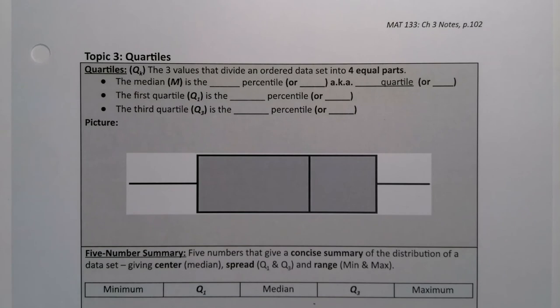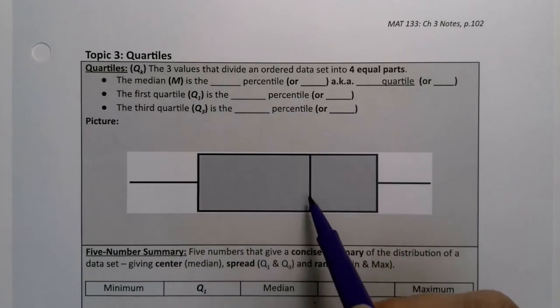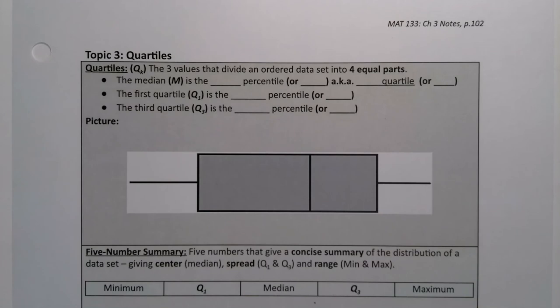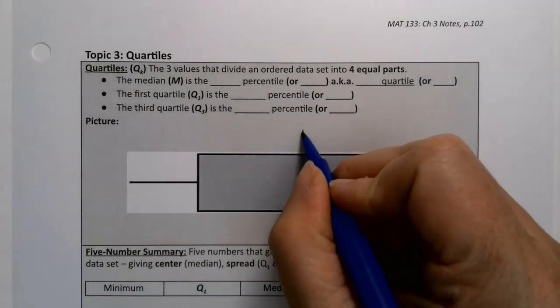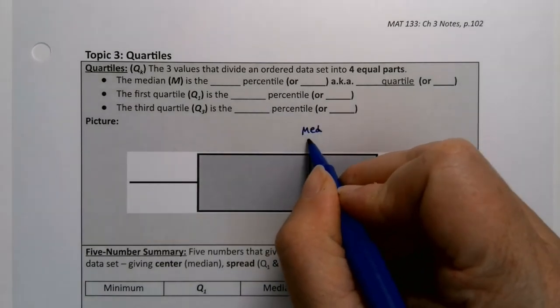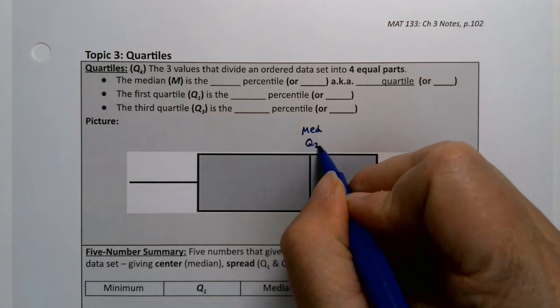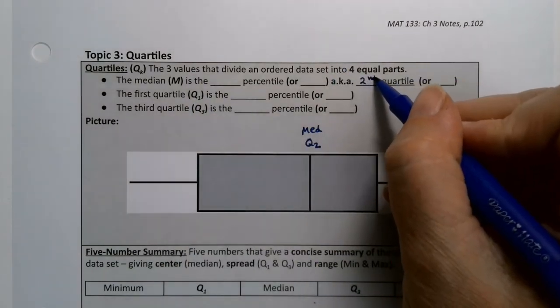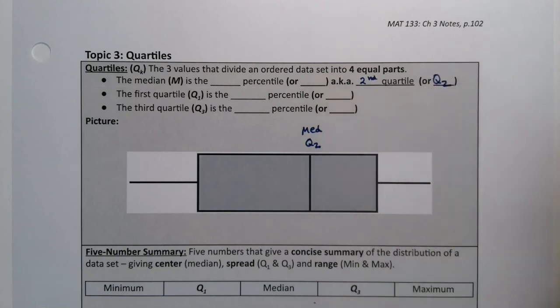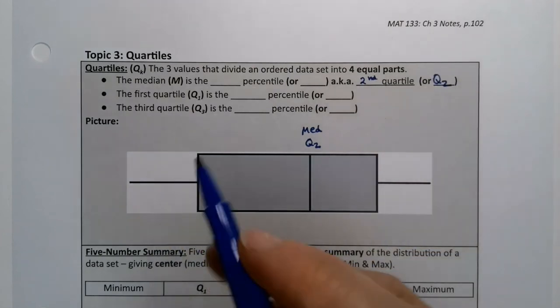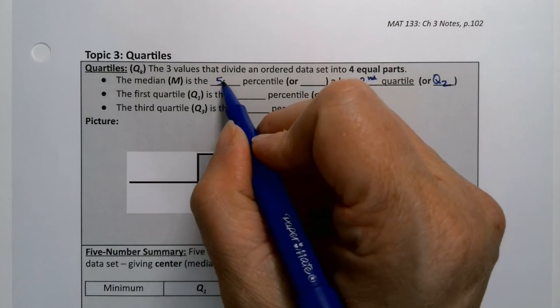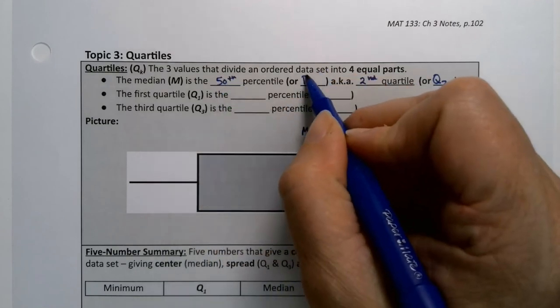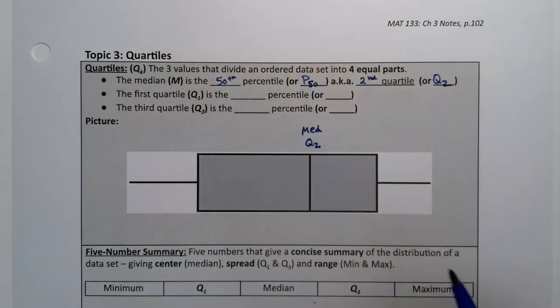So the median, which would be the middle score right here, of course, let's see, let me make it blue, median is right here, would be the second quartile. So that would be Q2, but that would make it the 50th percentile. We already saw that before, so it's the 50th percentile, so P subscript 50.